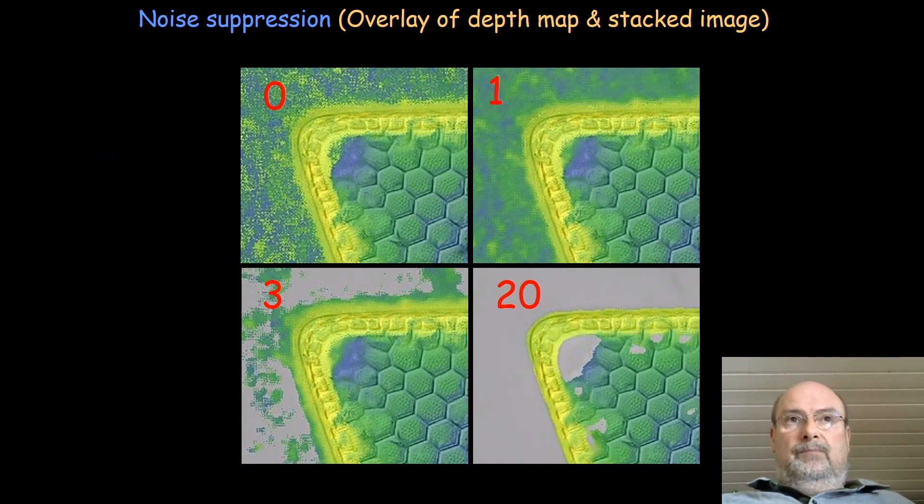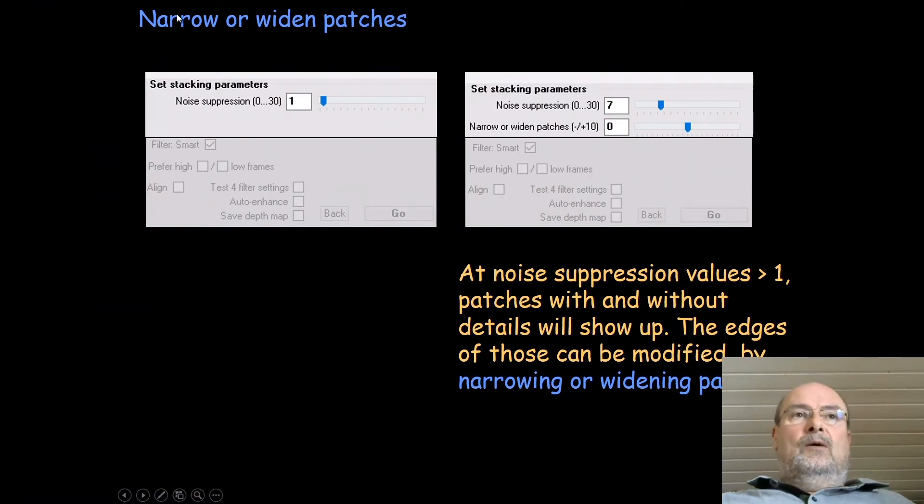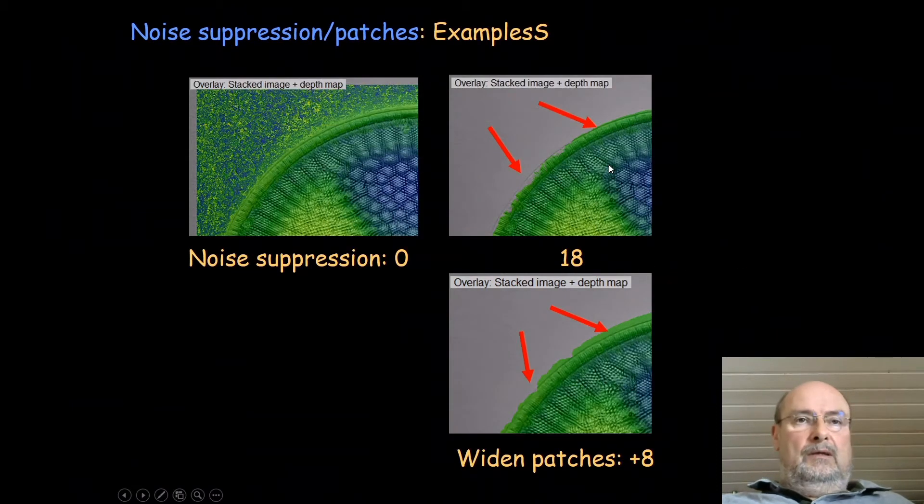When we have values above one, there is a new line that says narrow or widen patches. It can be plus or minus values and these help to modify the edges between structured and non-structured areas. You can make the structures a little bit wider or more narrow.